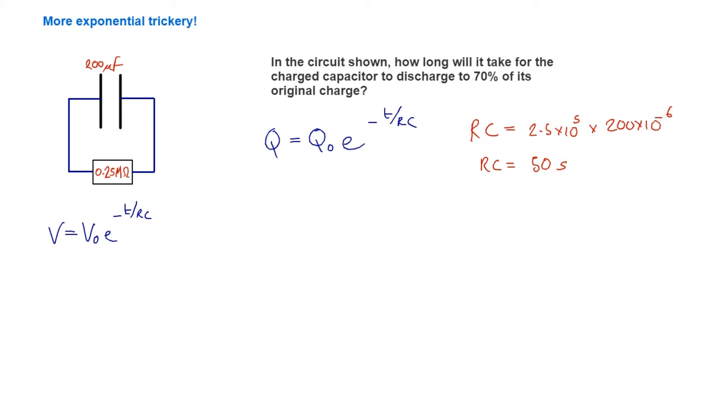The trick to these is to rearrange the equation so that you've got Q/Q₀ = e^(-t/RC). That's because Q/Q₀, where Q is the charge, is 70% of the original charge. So we know that Q/Q₀ is going to be 0.7.